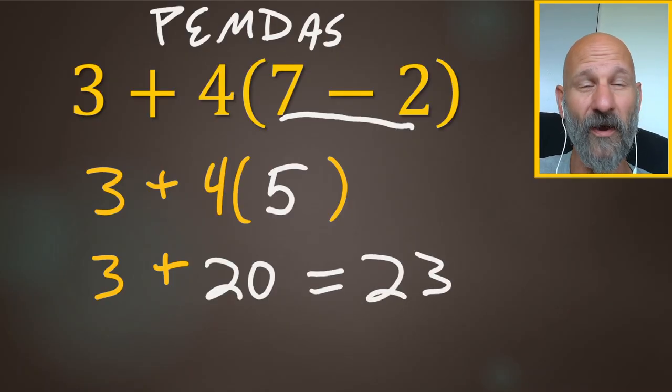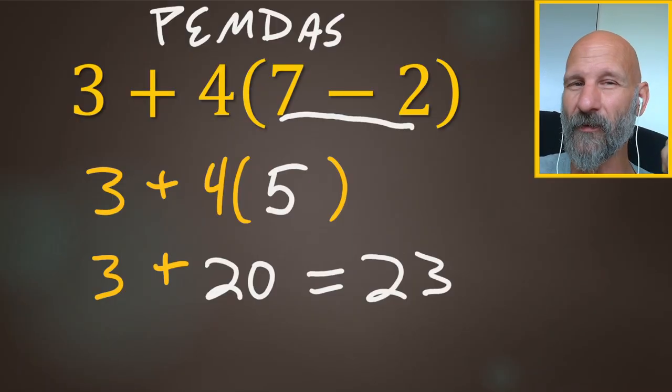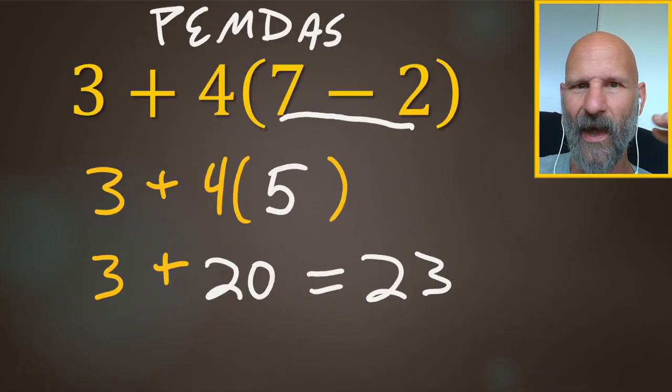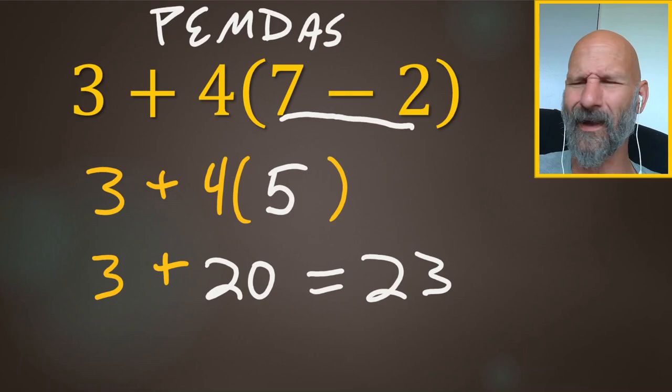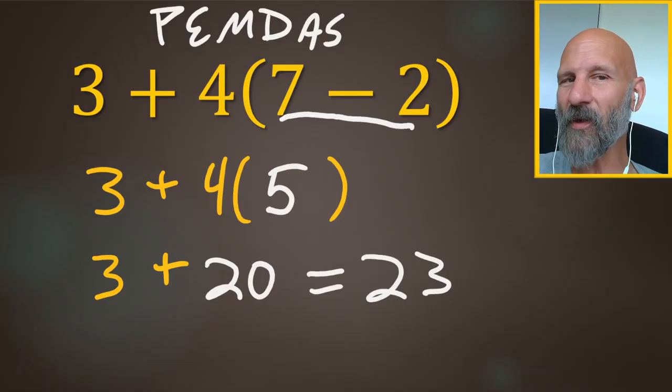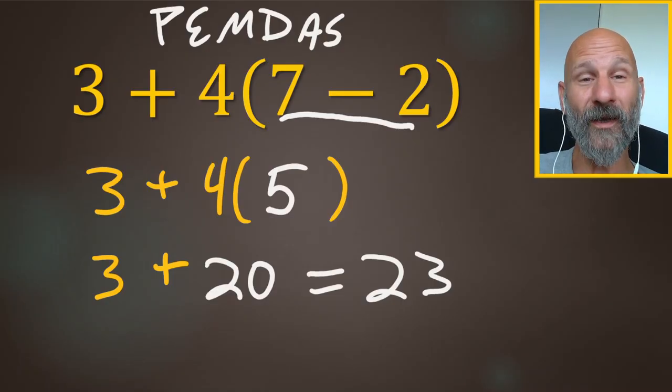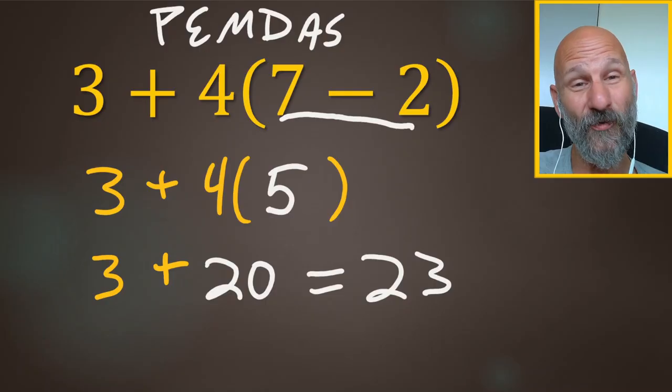Again, if you're getting this one wrong, it's not because you're not good at math. It's because you see that 3 plus 4 or whatever comes first and you think you need to do that. I've even taught this in colleges and the day before a test, half the people still get it wrong. But now you'll be smarter than that and you won't get this one wrong.